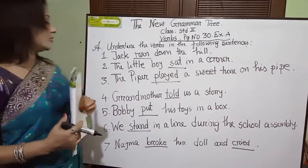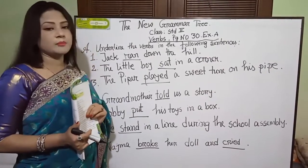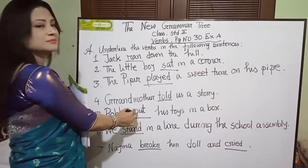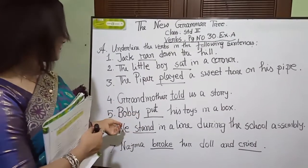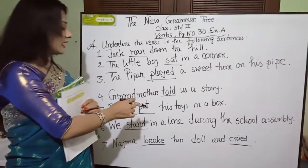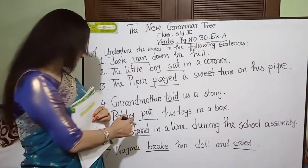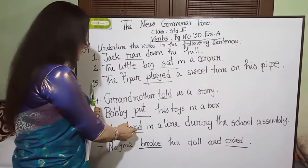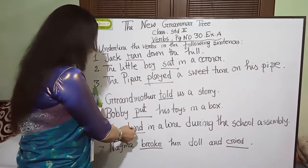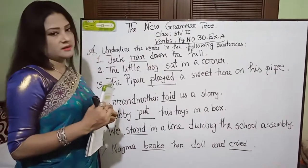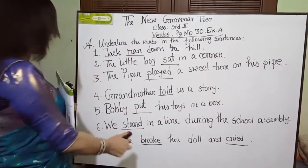Number 5: Bobby put his toys in a box. Here, 'put' is a verb. Number 6: We stand in a line during the school assembly. Here, 'stand' is a doing word. So, 'stand' is a verb.